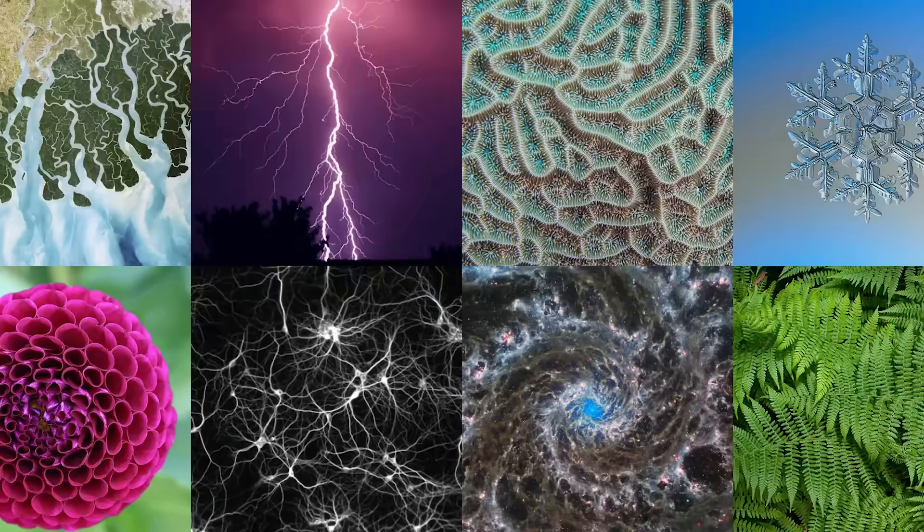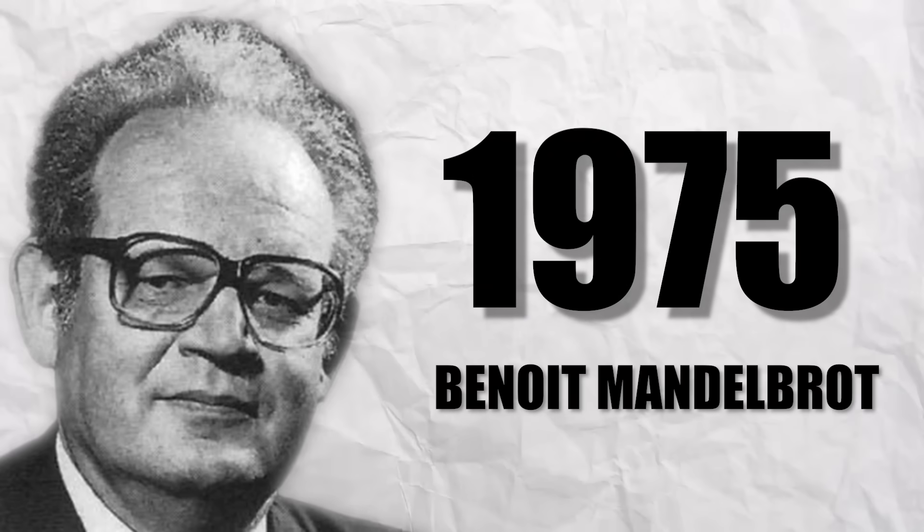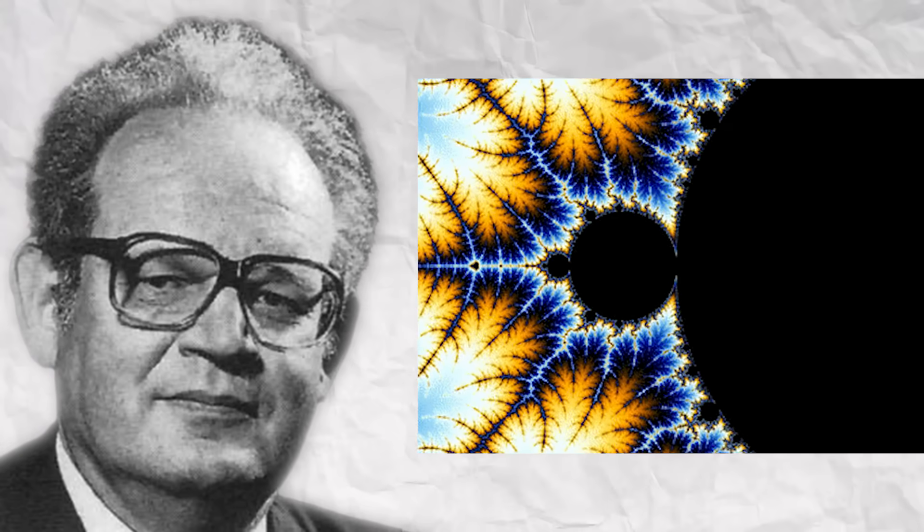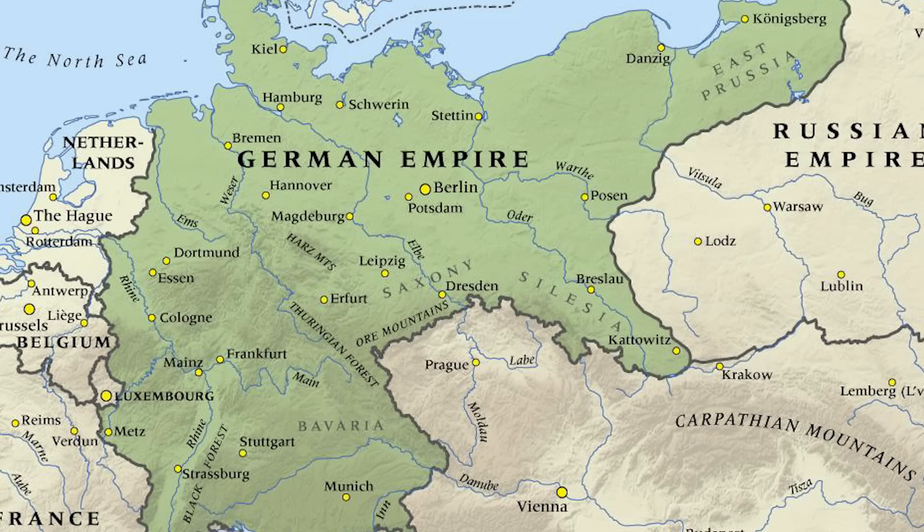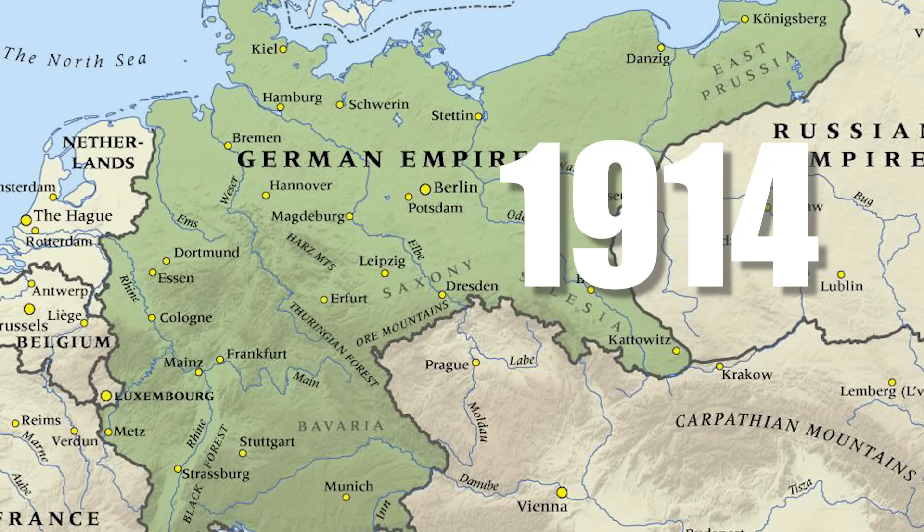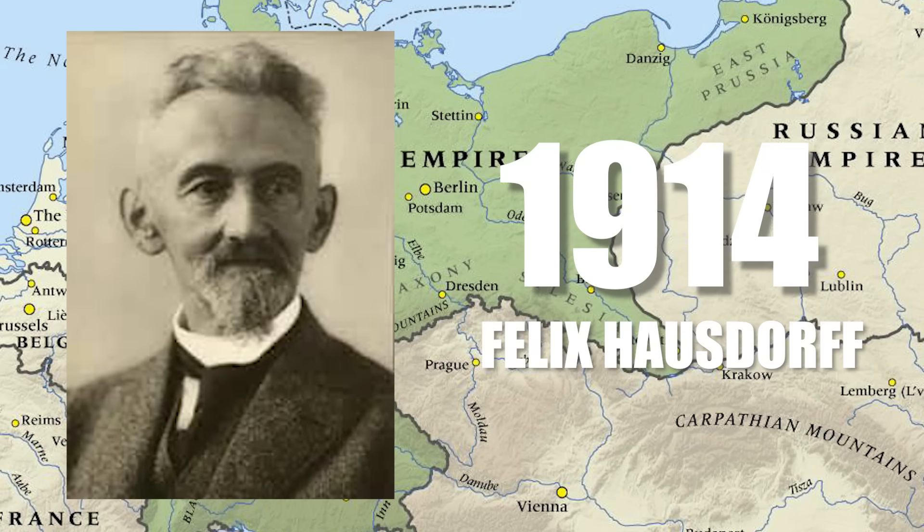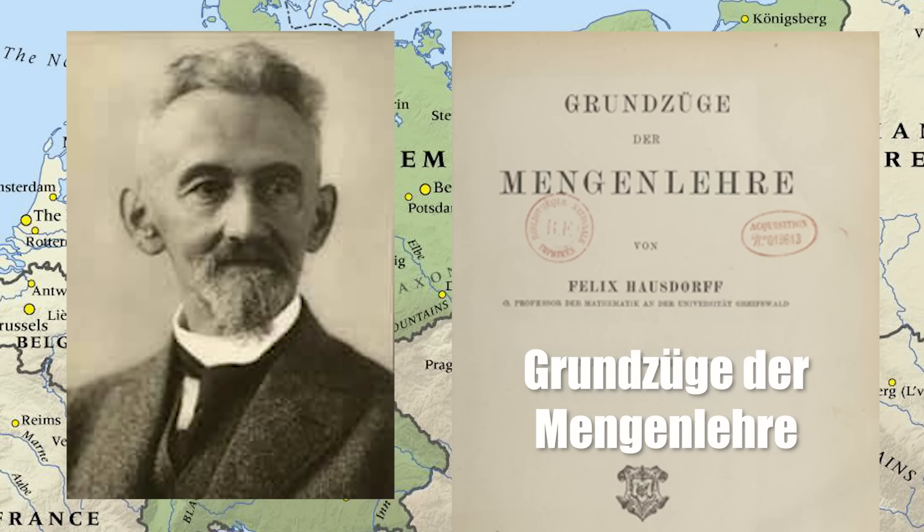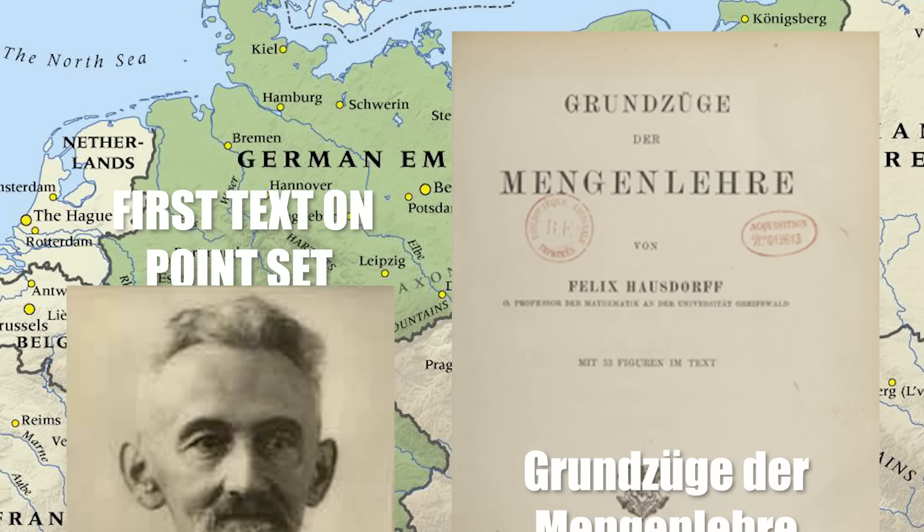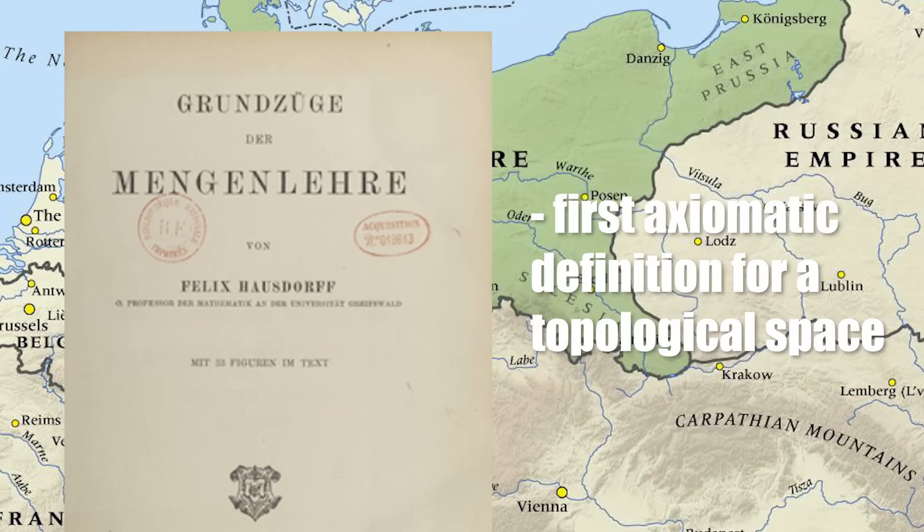These fractals have existed in our universe since the beginning of time. But it wasn't until 1975, when Benoit Mandelbrot, the guy this is named after, coined the term fractal. But to get to the root of identifying these objects, we need to head back 60 more years to World War I Germany. In 1914, German mathematician Felix Hausdorff released his seminal book titled Grundzüge der Mengenlehre, which is commonly regarded as the first text on point-set topology. The book contained the first axiomatic definition for a topological space, and many other definitions which solidified him as a founding father of topology.